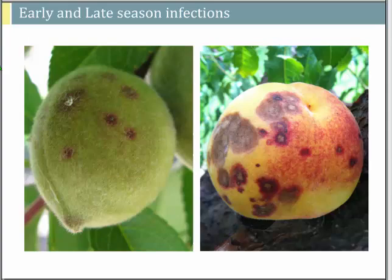Infections on peach fruit include early season infections showing a purple halo — similar looking to San Jose scale, but you'll also see infections on foliage as well as gumming or oozing on new fruits. Late season infections show brown, sunken lesions, likely from a rain event making the maturing fruit more susceptible.